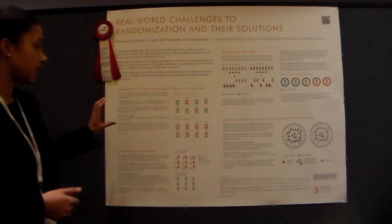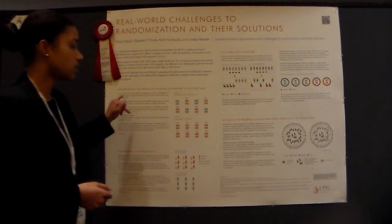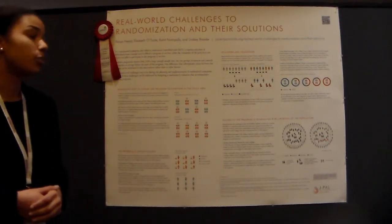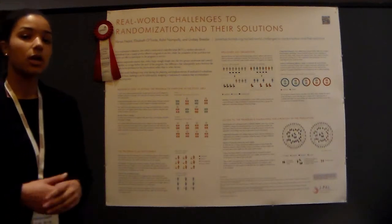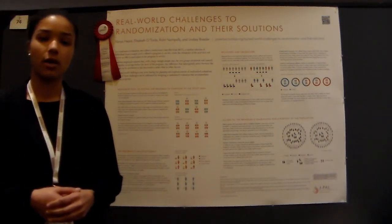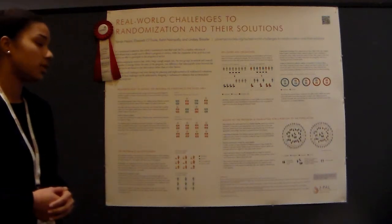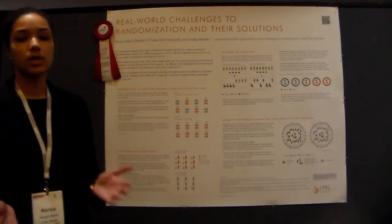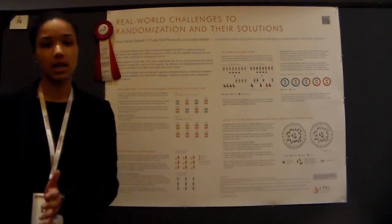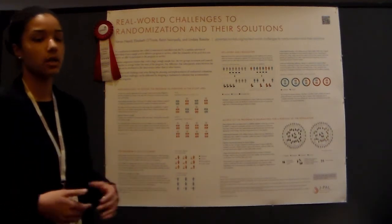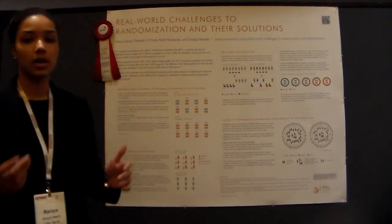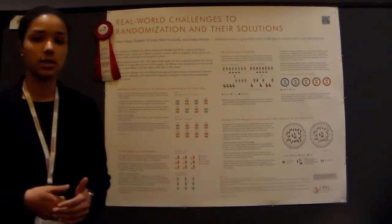In one case, there's a study conducted in California on a home computer program which distributed home computers to students in hopes of affecting their academic achievement. Essentially, it wasn't ethically feasible to distribute computers to only one segment of the population while not distributing to the other. So what they were able to do was randomize via a phasing design.